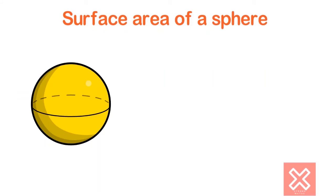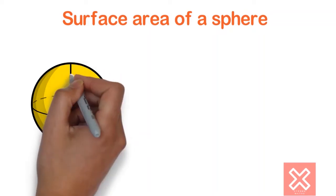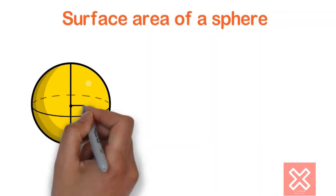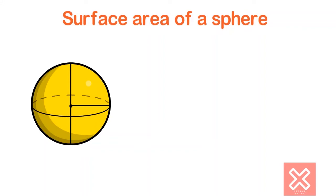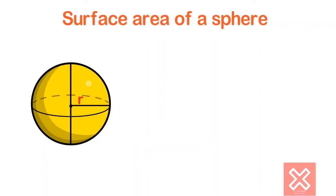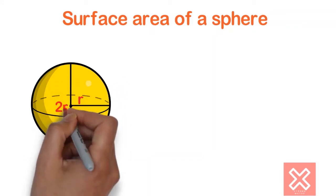Let's find the surface area of a sphere. Here is a sphere. Let's draw a line through the center — that is the diameter. And from the center to any point on the surface, if you draw a straight line, that equals the radius.